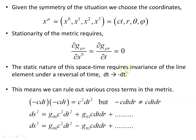The static nature of this spacetime requires invariance of the line element under time reversal — dt replaced with minus dt. We want a metric that's the same under such conditions. This means we can rule out various cross terms. Under time reversal, minus c·dt times minus c·dt still becomes c²dt², so that term is unaffected. But when we write out the line element, we have ds² = g₀₀ c²dt² + g₀₁ c·dt·dr. Under time reversal, minus c·dt·dr does not equal c·dt·dr — so the cross term changes.